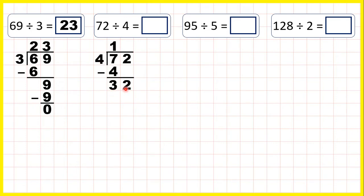So now we have 32 divided by 4. Well 32 is in the 4 times table, and that's 8 times 4, so 8 goes in our answer line. Then we can subtract to show that we don't have a remainder, and we have our answer.